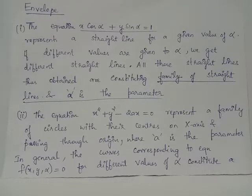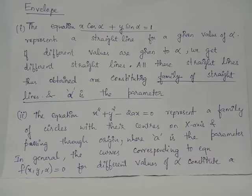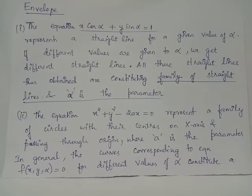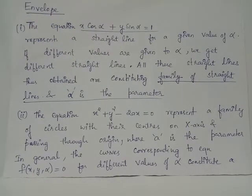Example 1: The equation x cos(alpha) + y sin(alpha) = 1 represents a straight line where alpha is the parameter. When you give different values for alpha, corresponding to each value you get a different straight line. This set of straight lines satisfying x cos(alpha) + y sin(alpha) = 1 constitutes a family of straight lines. For alpha = 0 you get x = 1, and for alpha = π/2 you get y = 1, which are examples of lines belonging to this family.